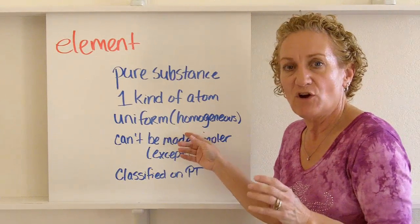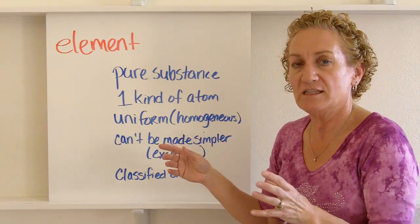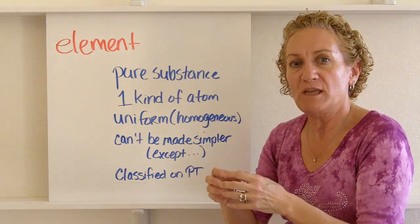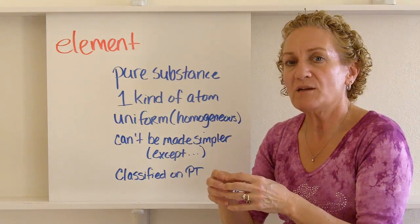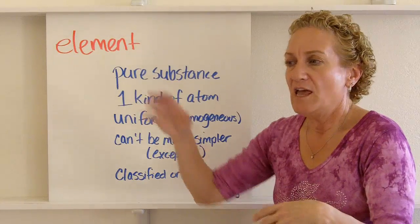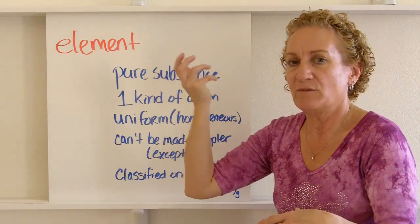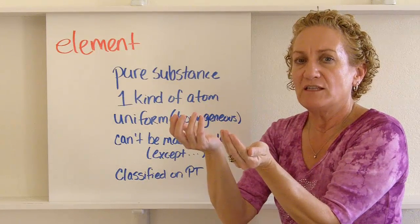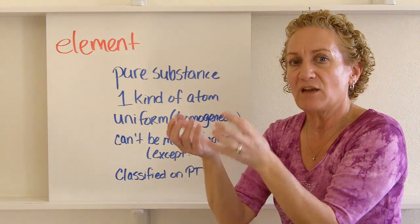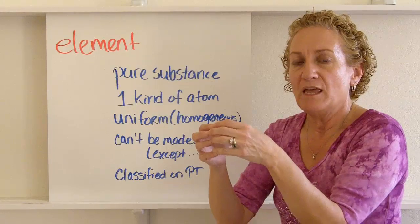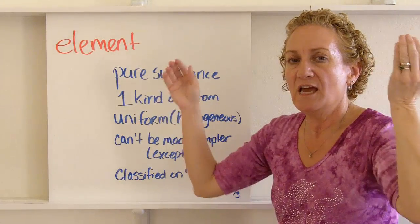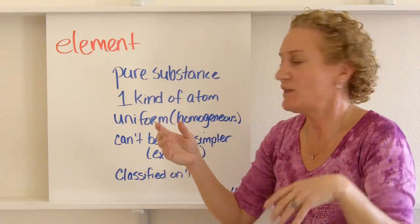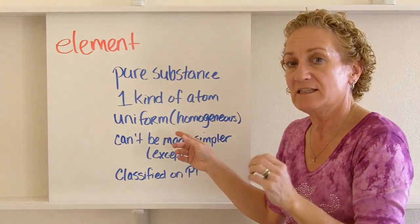Here's a word that maybe you know and maybe you don't: homogeneous. Let's take that apart. The prefix 'homo' means the same, so we're talking about something that is the same throughout. If I take a sample of carbon dioxide from here and a sample from here, they're identical — it doesn't change based on where I take the sample from, whether from New York City or Los Angeles. Homogeneous means it's the same throughout.